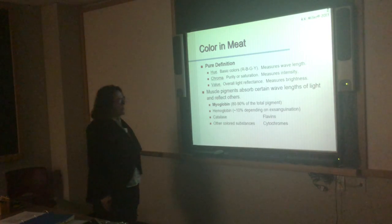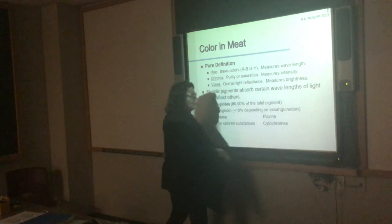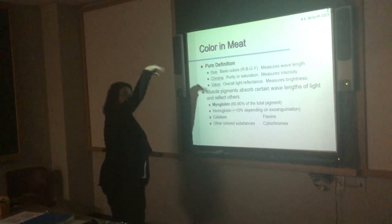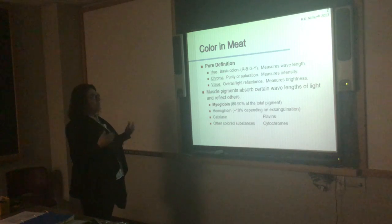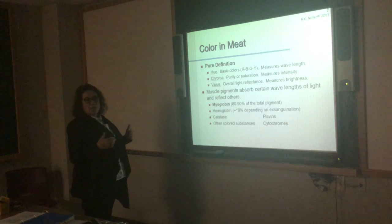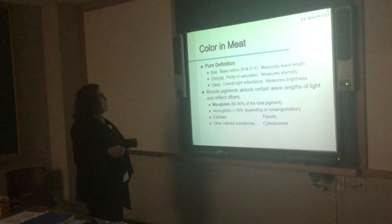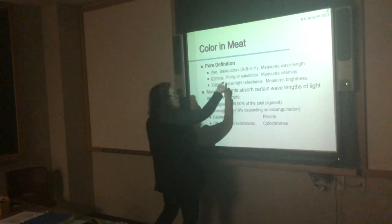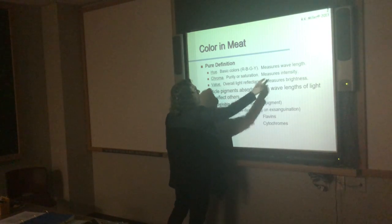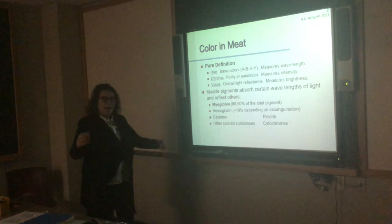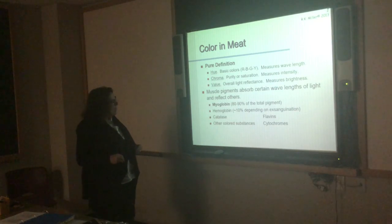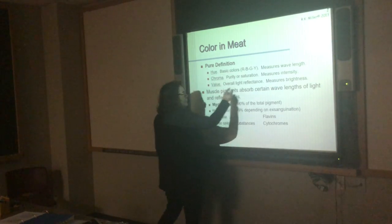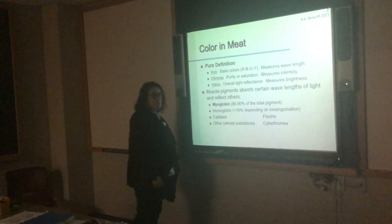Wavelength is usually measured in nanometers. Chroma is the purity or saturation of color — it measures the intensity, how many wavelengths you have, how strong the color is. Value is the overall light reflectance, which is a measure of brightness. In meat, we have color because there are pigments — proteins in the meat — that absorb certain wavelengths of light and reflect other wavelengths.